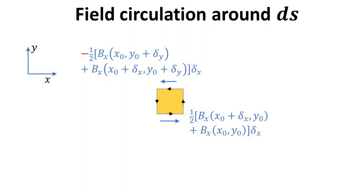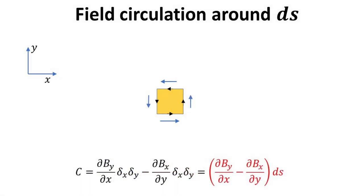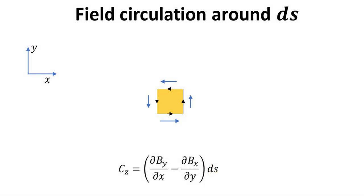In similar fashion, we work out the contributions to the circulation by the paths along positive and negative x. This time it is the b_x component that is tangential to the paths. The contribution is given by the average tangential field multiplied by the path length delta x. The combined contributions are the finite difference approximation to the differential of b_x with respect to y, multiplied by the elemental area delta x times delta y, as shown in red. Hence, the net contribution to the circulation around an elemental area ds in the x-y plane is given by the difference in the cross-differentials of the in-plane field components, multiplied by the elemental area. Where the surface vector of ds is along z, we denote the circulation as c_z, given by the differential of b_y with respect to x minus the differential of b_x with respect to y, multiplied by ds.